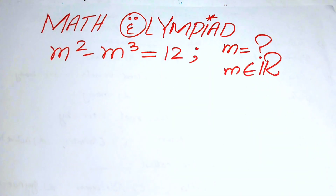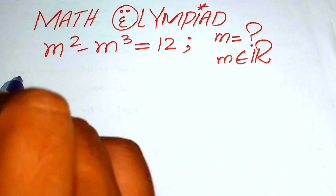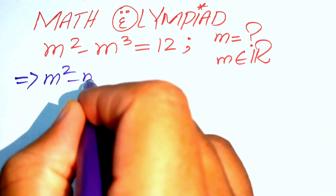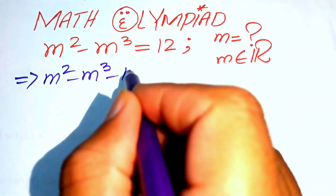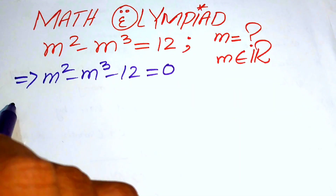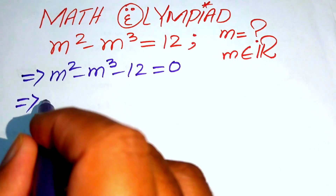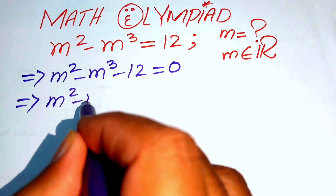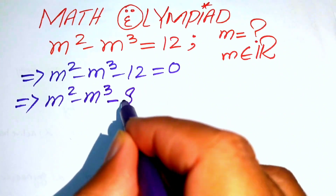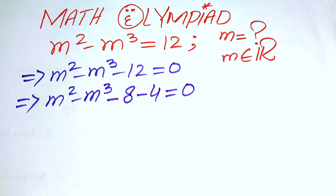The very first step is to move 12 to the left-hand side, so it is written as m squared minus m cubed minus 12 equals 0. We rewrite this equation as m squared minus m cubed minus 8 minus 4 equals 0.